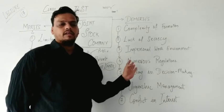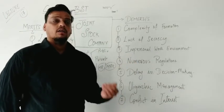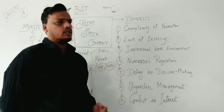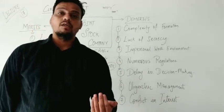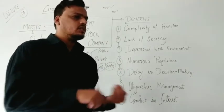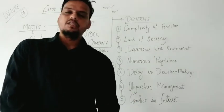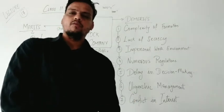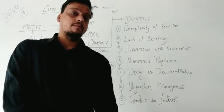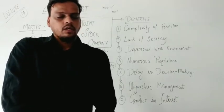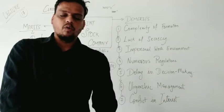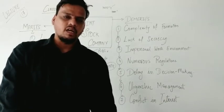If one member doesn't come, then the decision can be delayed. If two or three people don't come, the voting system can't proceed and the decision gets delayed. Some decisions are related to the owners, so the owners must be present to discuss them. This causes decision-making time to increase.